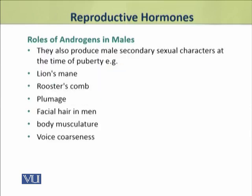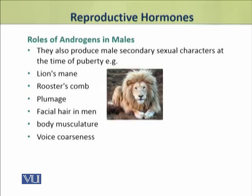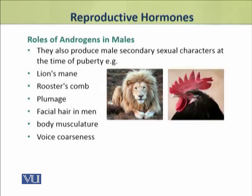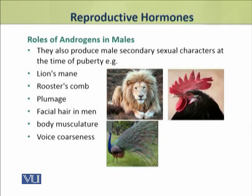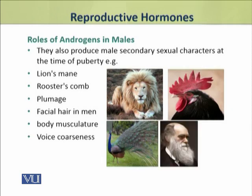Androgens also produce male secondary sexual characters, which develop after puberty. These characters include the lion's mane, rooster's comb, plumage in birds, facial hair in men, body musculature in males, and voice coarseness. These are secondary sexual characters, and they develop after puberty.